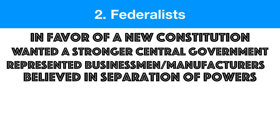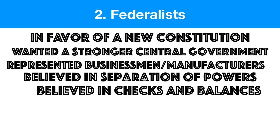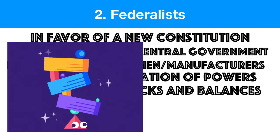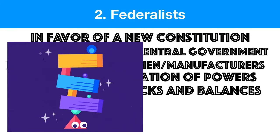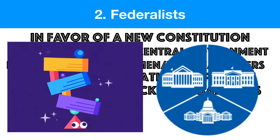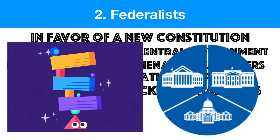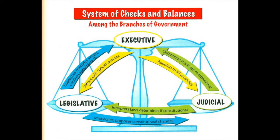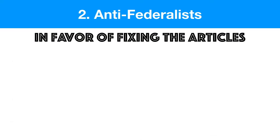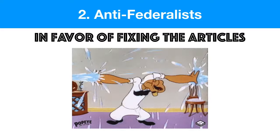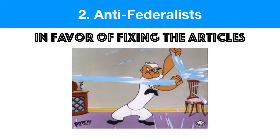Now, having a stronger central government was still very scary, even for a Federalist. But they believed in separation of powers and checks and balances. This new Constitution would divide power among each branch of government and balance them so that one wouldn't overpower the other. And just in case, each branch would be given the power to stop the others if one became too powerful. The Anti-Federalists, on the other hand, were against making a new constitution — they wanted to just fix up the Articles.